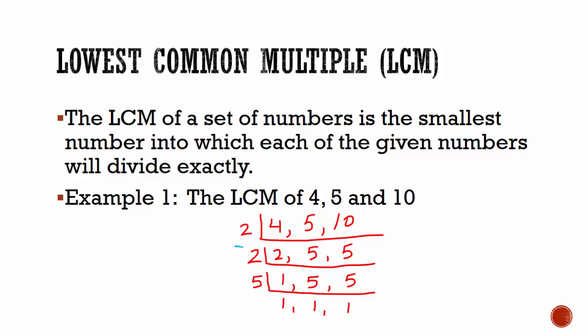Then we multiply out to get the result. So the LCM of 4, 5, and 10 is equal to 2 multiplied by 2 multiplied by 5.